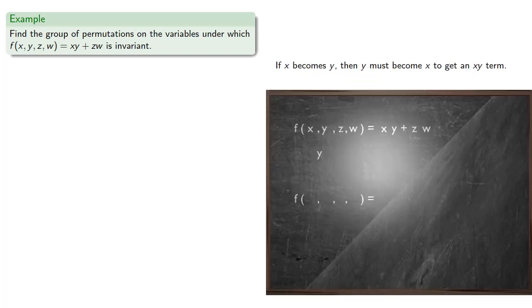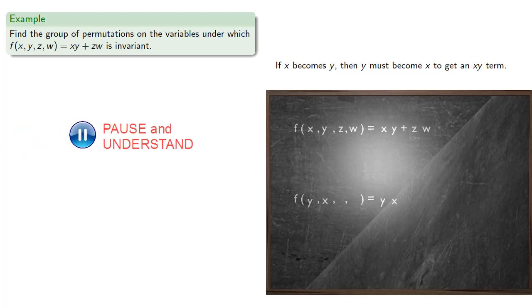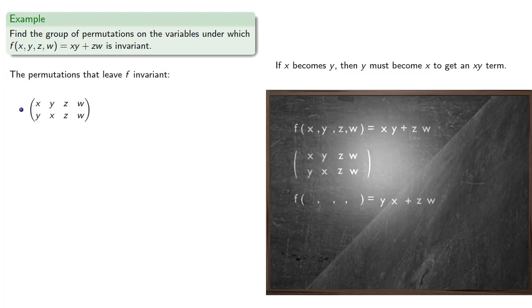If x becomes y, then y must become x in order to get an xy term. Meanwhile, the variables z and w, we could leave them alone, and that gives us this permutation. Or, we can switch z and w, and that gives us this permutation.